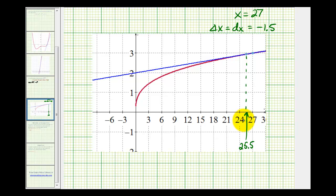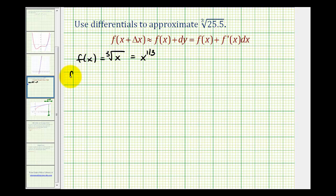So let's set this up. The idea here is we want to make an approximation for f of 25.5. To do this, we're going to let x equal 27 and let delta x equal negative 1.5. And to make this approximation, we're going to evaluate the function at the convenient value of 27.